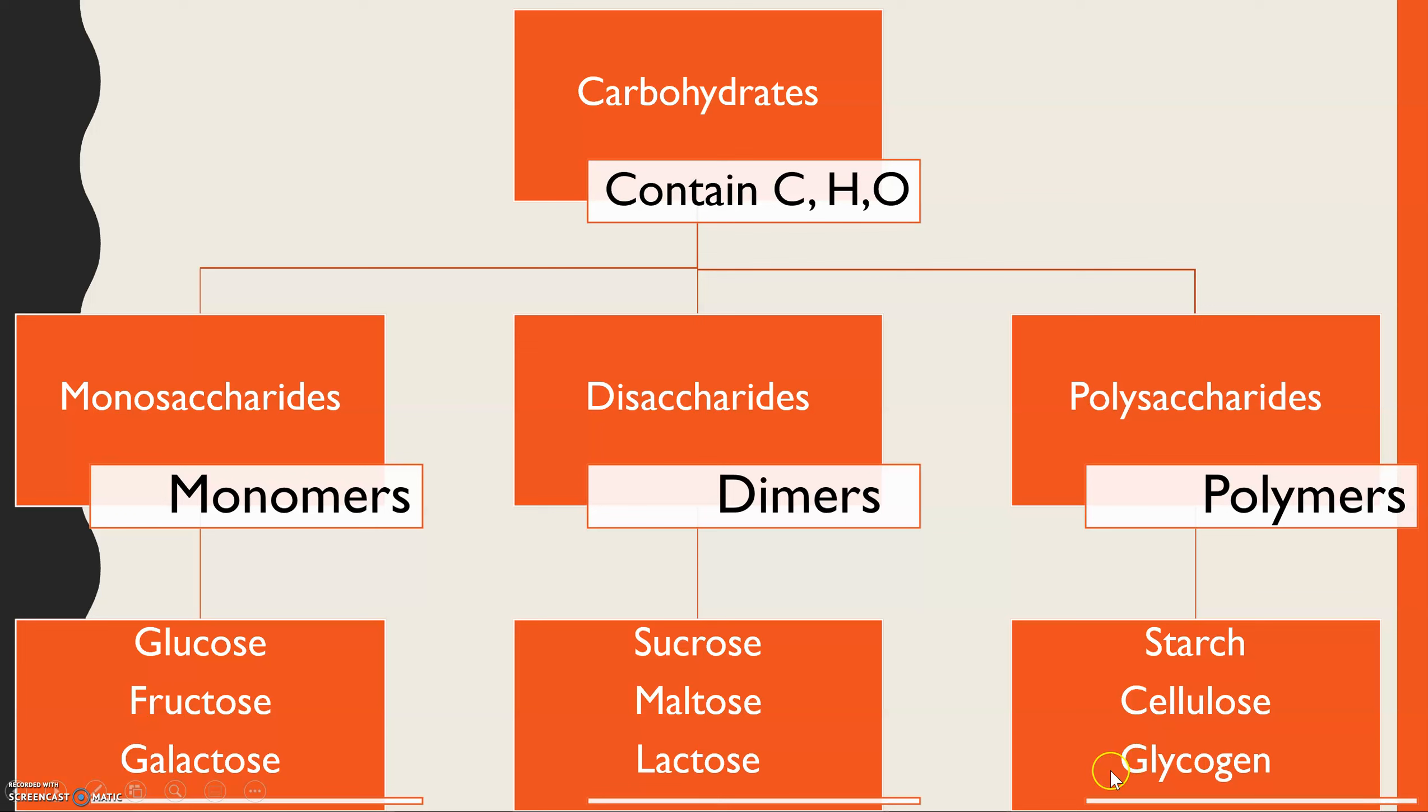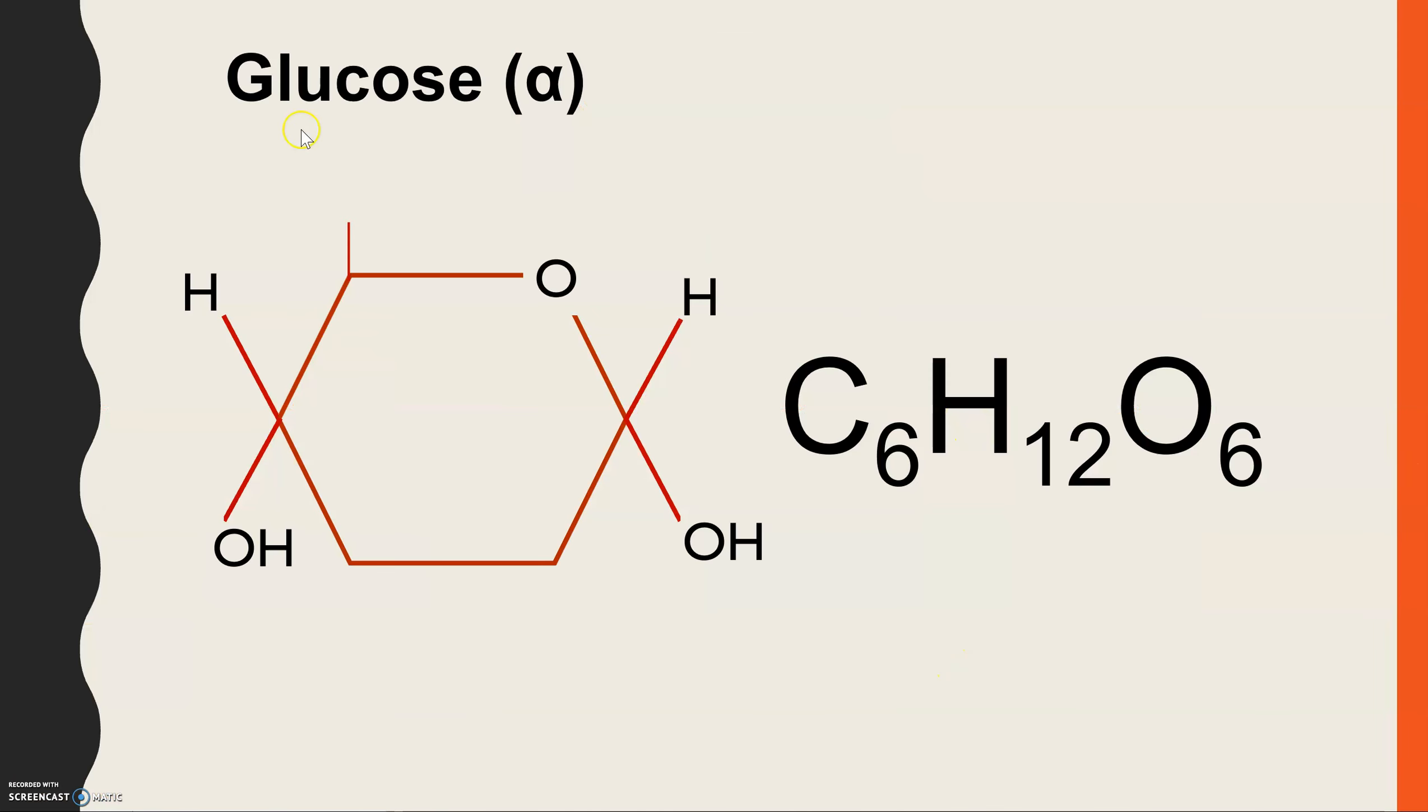Now, all three of those you'll be familiar with from GCSE. But we go into a lot more detail at A level about the structure and the function. So glucose is the key monosaccharide that you need to know about. And that's because it's the monosaccharide found in all three polysaccharides. The molecular formula is C6H12O6, which you would need to know. And you also need to be able to draw glucose.